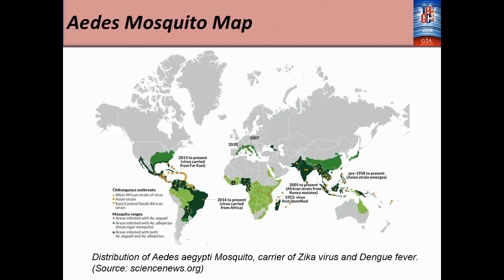The Aedes mosquito map shows countries that have the Aedes mosquito, where there is a possibility that Zika might become endemic. The countries with the darkest green have both species of the Aedes mosquito. This gives an overview of the possibilities of Zika becoming endemic in various countries. The Aedes mosquitoes are also present in Nigeria, where I come from, so there is a possibility of a Zika epidemic in Nigeria as well.